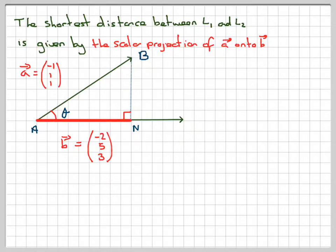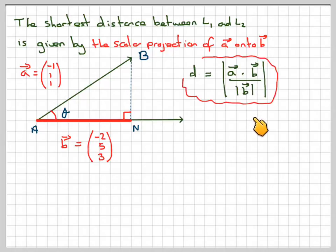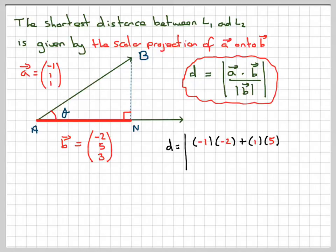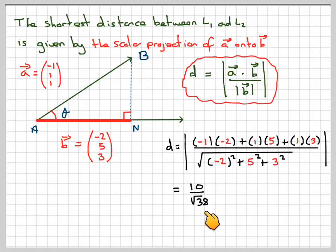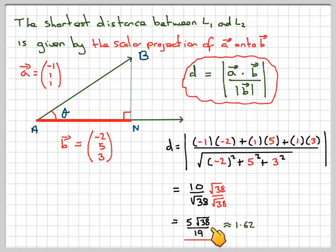The shortest distance between L1 and L2 is the scalar projection of A onto B, where A is (-1, 1, 1) and B is (-2, 5, 3). The distance is A dot B over the magnitude of B. So: (-1)×(-2) + 1×5 + 1×3 = 2 + 5 + 3 = 10, over root of (4 + 25 + 9) = root 38. That gives 10 over root 38, which simplifies to 5 root 38 over 19, approximately equal to 1.62.